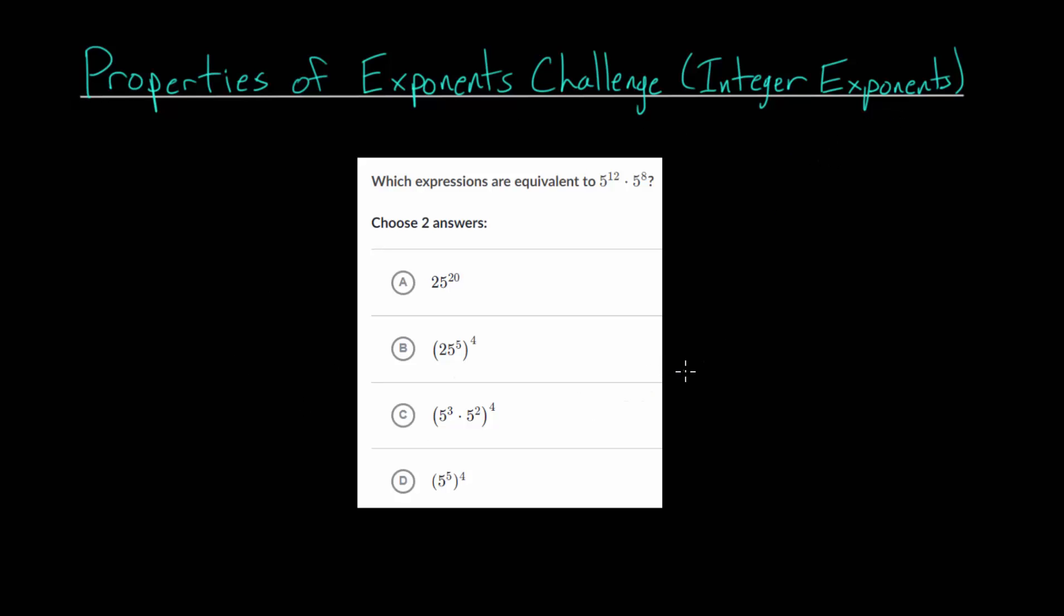Let's start looking at these problems and develop strategies for each individual problem type. This first one asks which expressions are equivalent to 5 to the 12th times 5 to the 8th. We have 5 to the 12th multiplied by 5 to the 8th, and we need to choose two different answers that this is equivalent to.